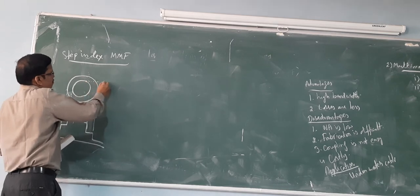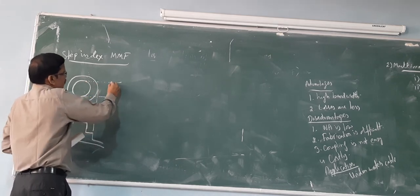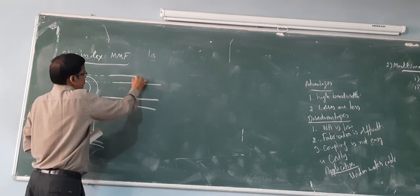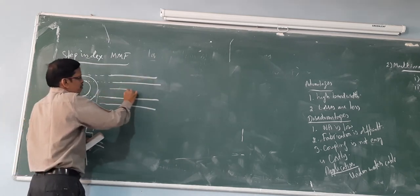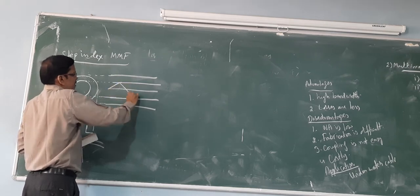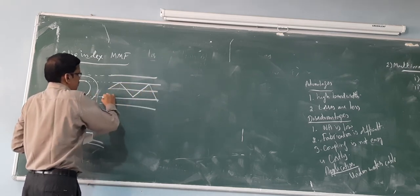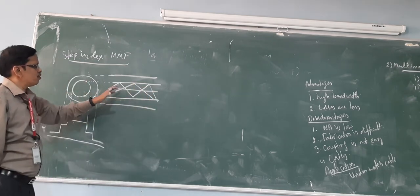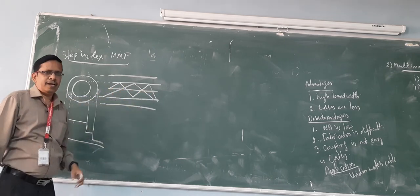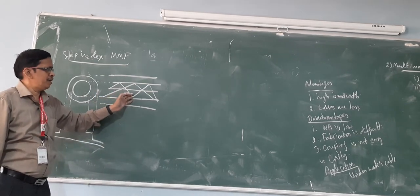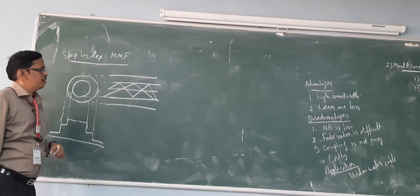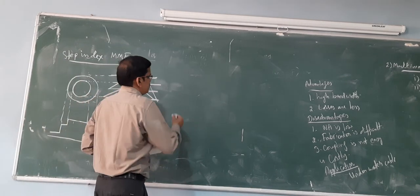Now we will see the side view of this fiber with its core region and cladding region. In this fiber there will be a mode of propagation along the axis, along with several other modes of propagation. Here I showed three modes: one along the core axis, a second, and a third. Since its index profile is in the form of a step, this is called a step-index multi-mode fiber.